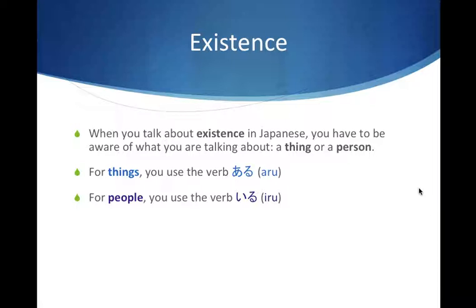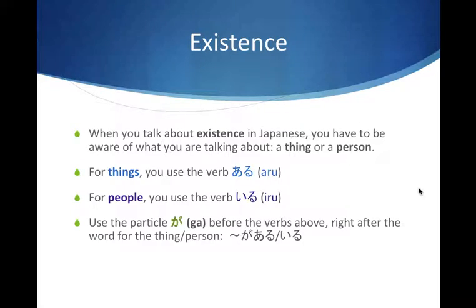Those are the two most important things to remember. For the next two points, it's just some details. First, what comes before those verbs: we're going to use the particle Ga right before Aru or Iru — not Wa, but Ga. So it's: whatever Ga Aru, or whatever Ga Iru.